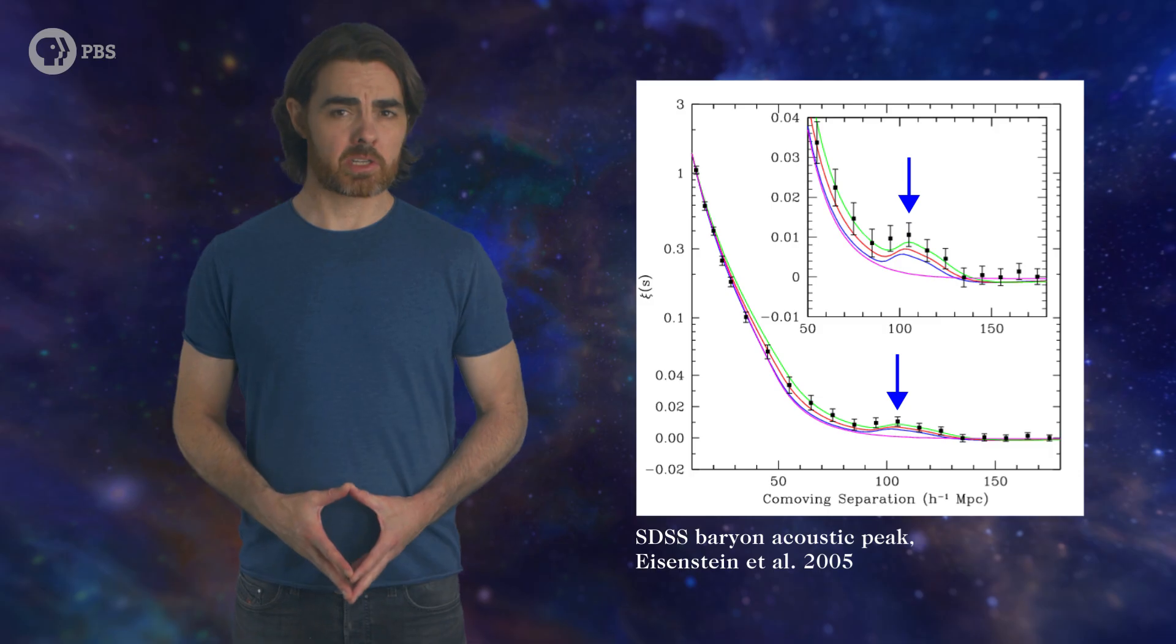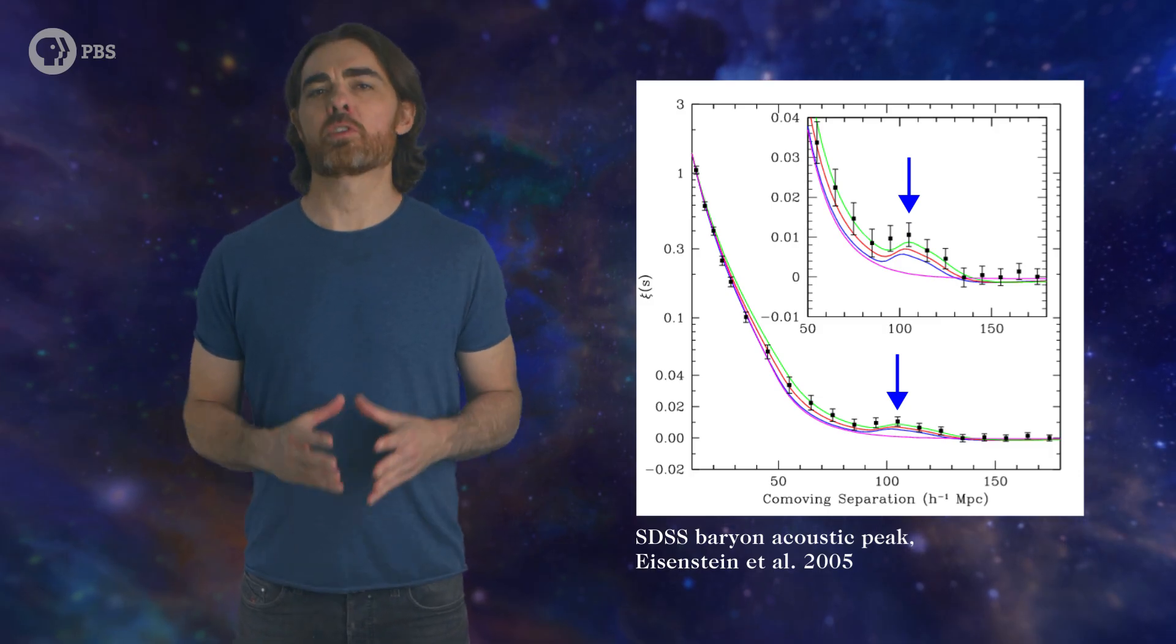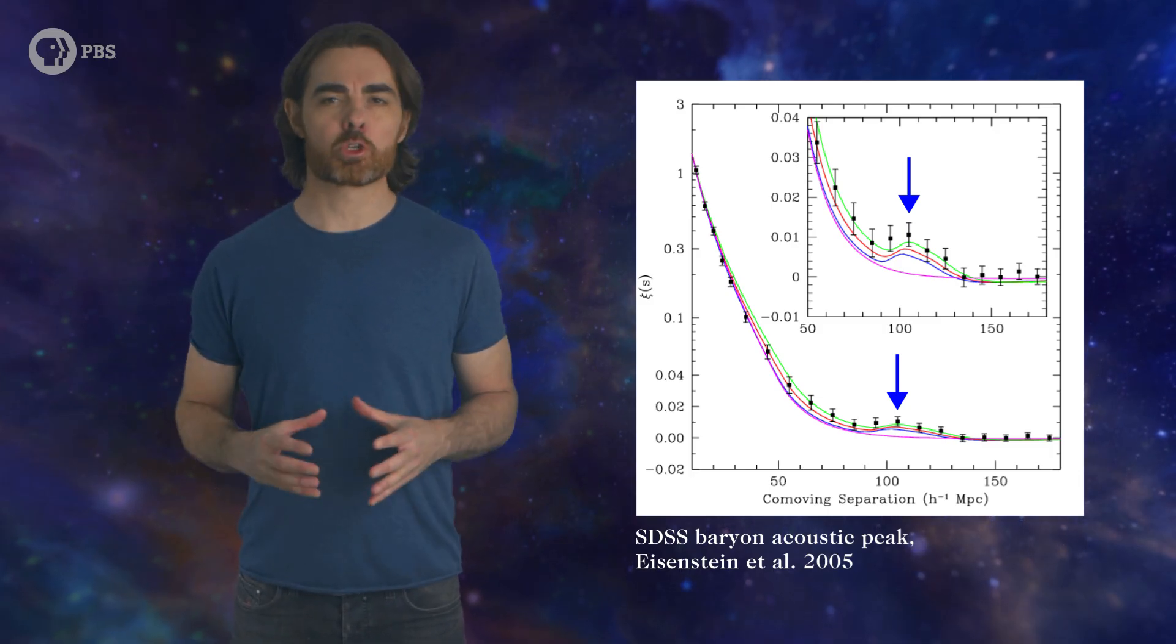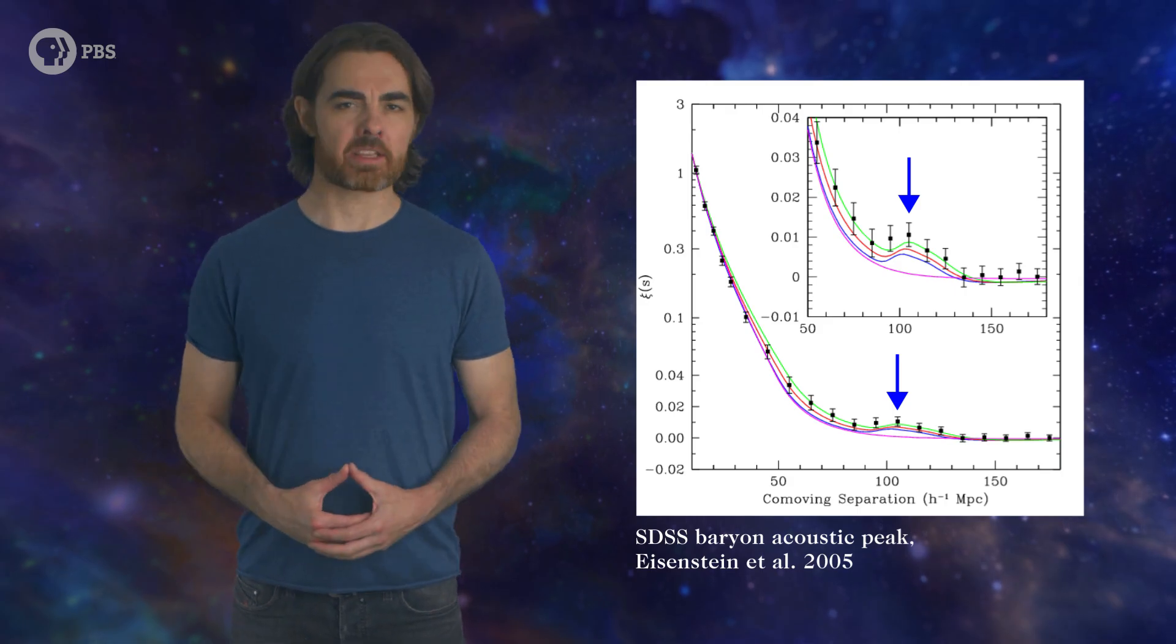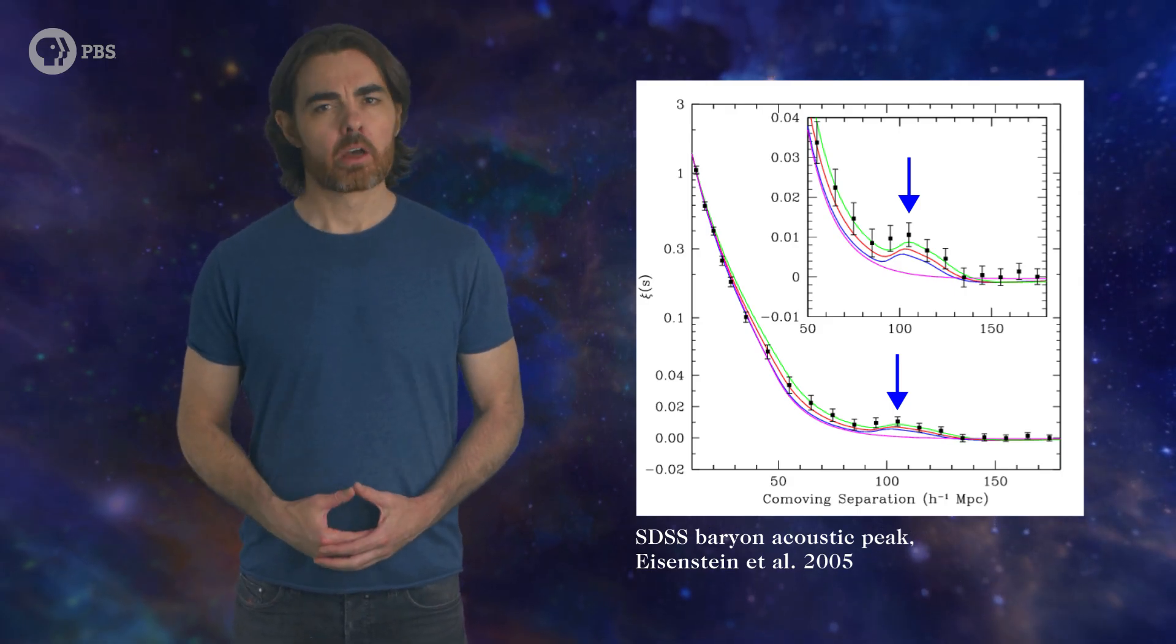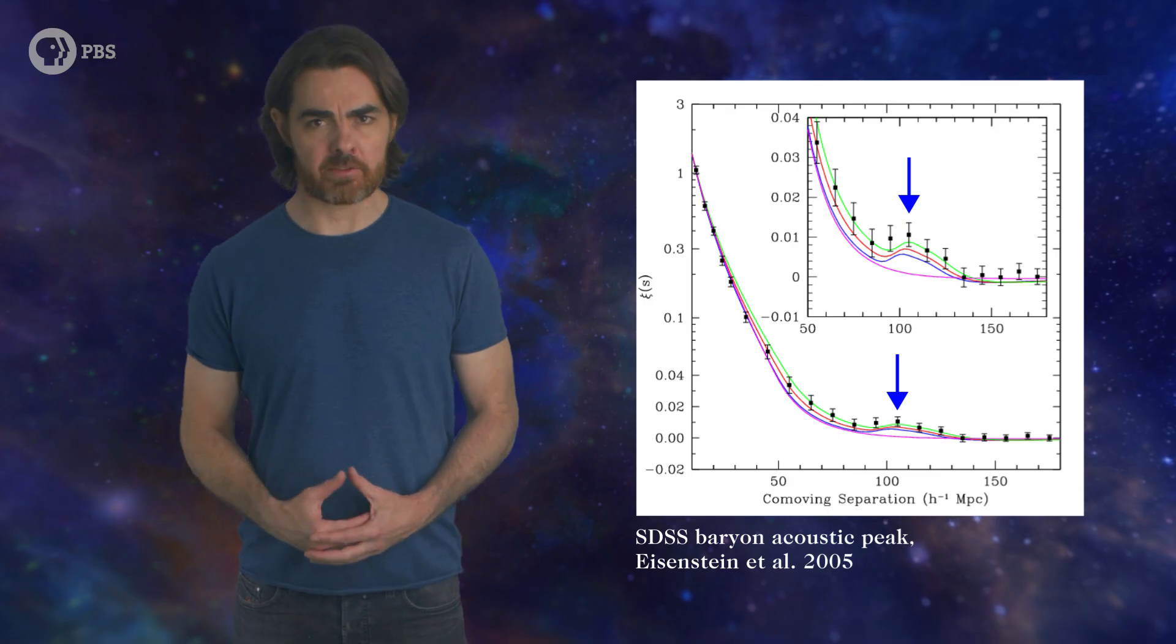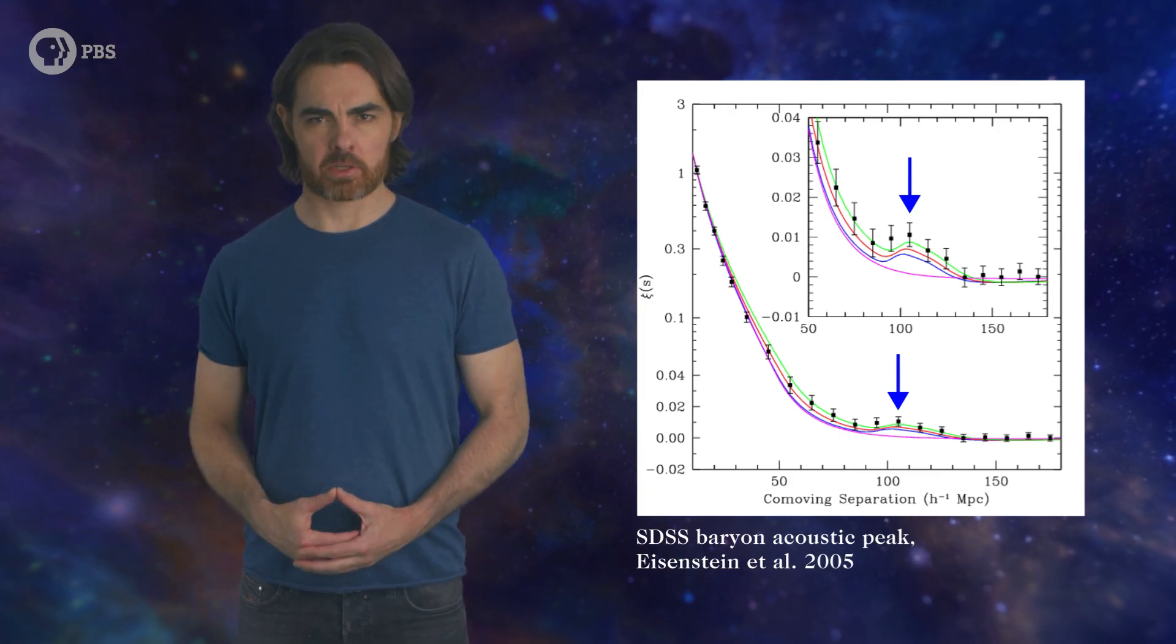This baryon acoustic oscillation signal was first spotted in 2005 by the Sloan Digital Sky Survey in the northern hemisphere galaxies, and the 2DF survey in the south. Since then, the Wiggle-Z, BOSS, and 6DF surveys have improved the measurements. Now, there was a powerful driving motivation to make this measurement and to improve it.